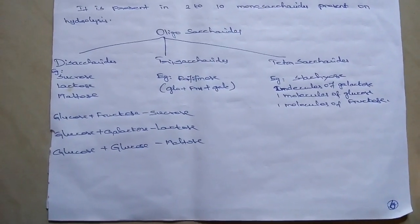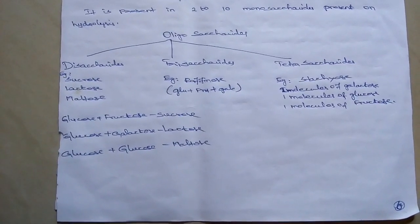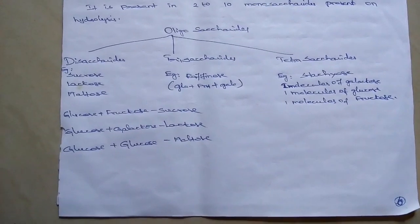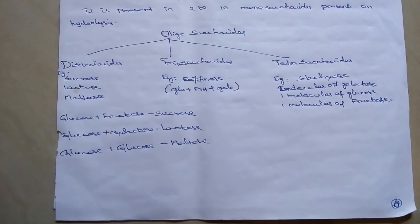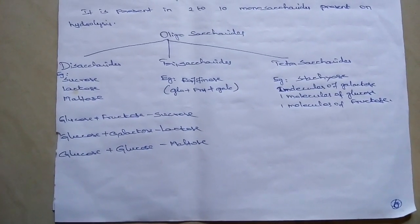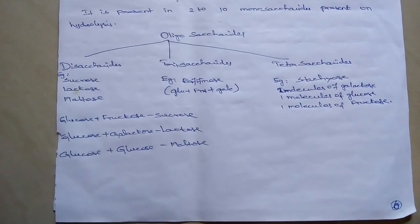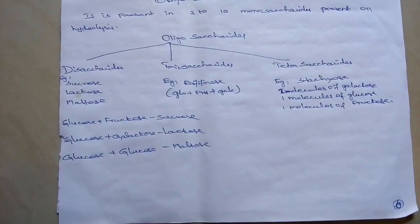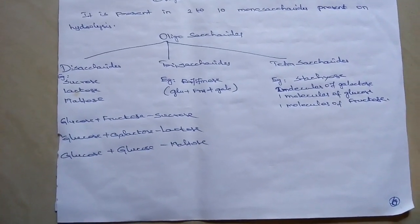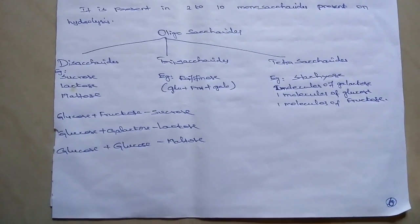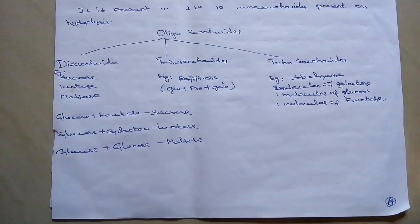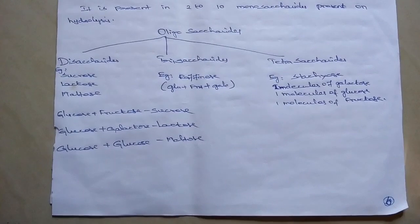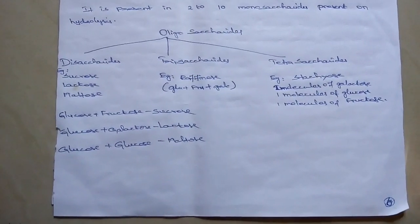Trisaccharides contains three monosaccharide units. Example: Raffinose. Raffinose is composed of glucose combined with fructose and fructose combined with galactose. Next one: Tetrasaccharides contains four monosaccharide units on hydrolysis. Example: Stachyose. Stachyose contains two molecules of galactose and one molecule of glucose, combined with one molecule of fructose.